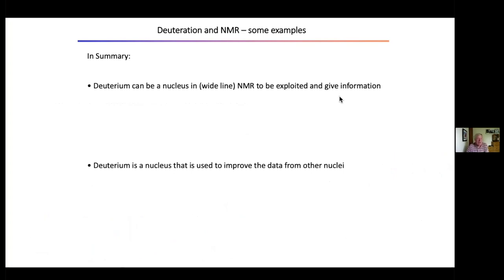To summarise this introduction: deuterium can be a nucleus in wide-line NMR to be exploited directly to give information. Secondly, deuterium is a nucleus that can be used to improve the data from other nuclei. Those are the two bottom lines from this introduction. What I'm going to do now is give you some examples focused on membrane proteins and membranes.